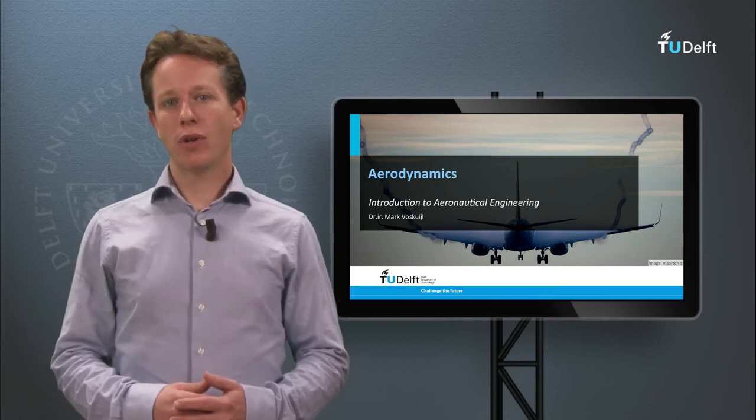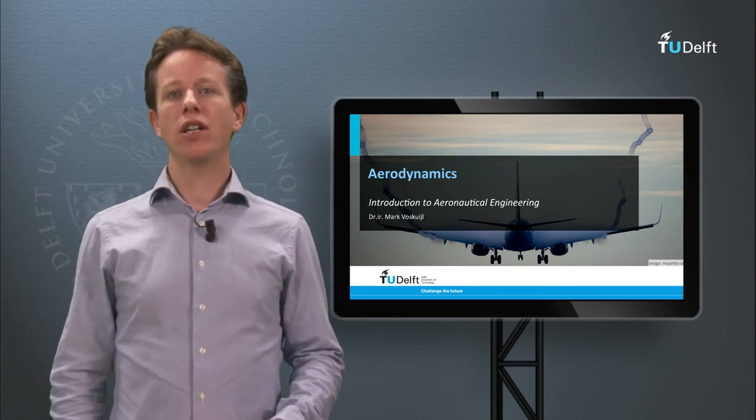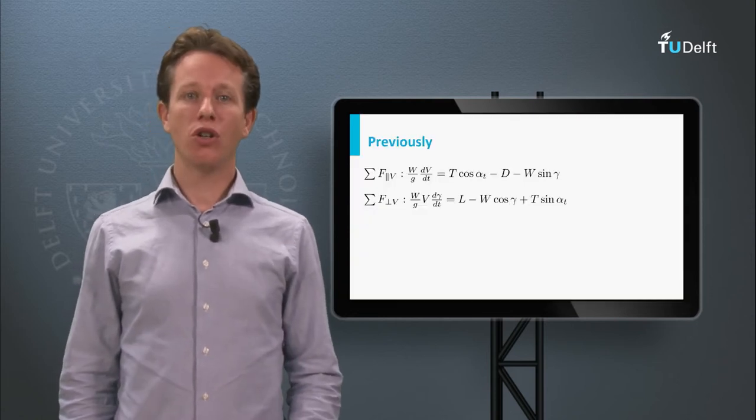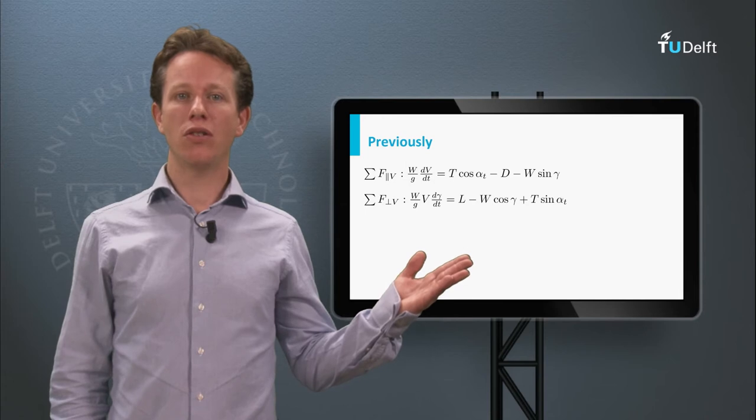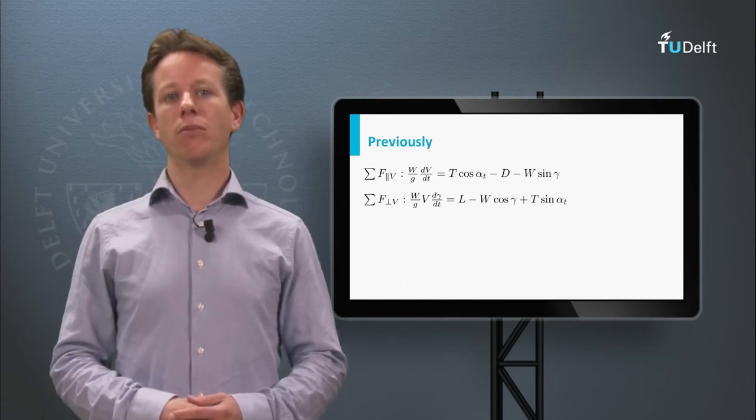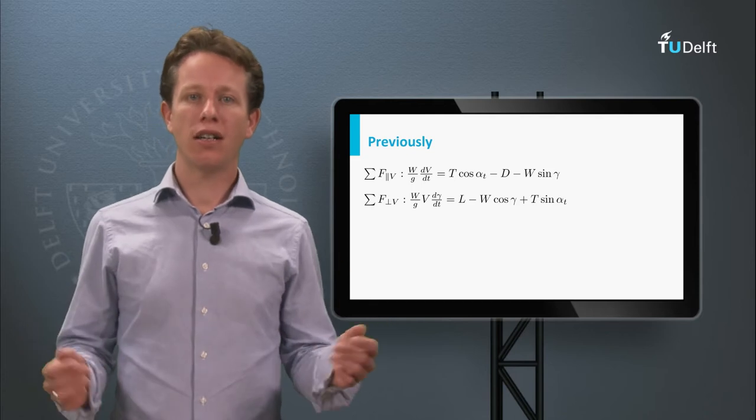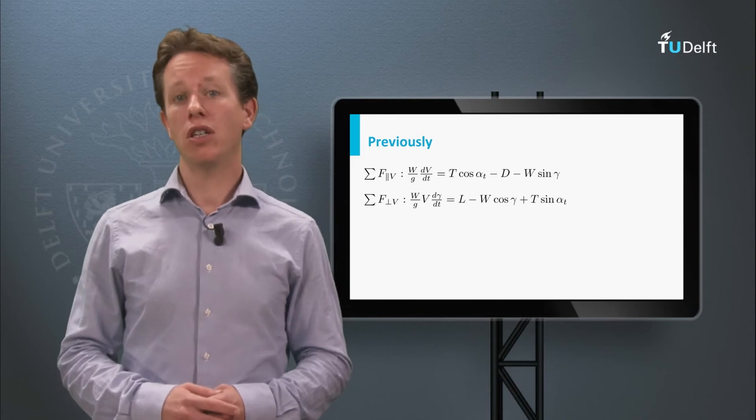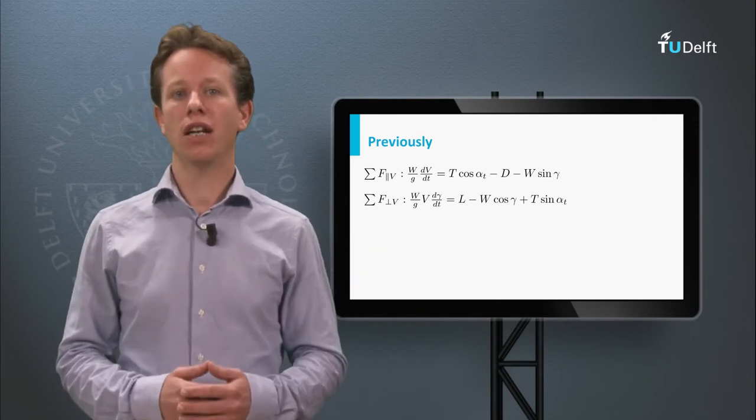In the previous item we derived the point-mass equations of motion for two-dimensional symmetric flight. We would like to use these equations to answer questions like how far can an aircraft fly with a given amount of fuel, how fast can an aircraft fly, how slow can an aircraft fly, what is the maximum altitude that can be achieved, or how steep can an aircraft climb.